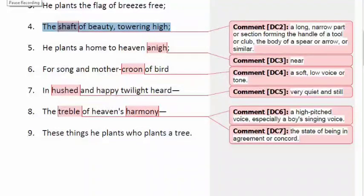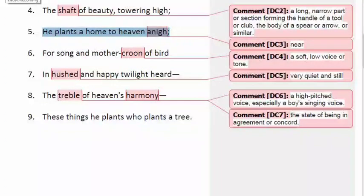He plants a home to heaven anigh. Where do we usually assume heavens to be? Up in the sky. Let's also consider line six: for song and mother croon of bird. The person planting a tree is establishing a home for birds who will be near the heavens because of the tree's height. All the birds, including those that sing melodiously, will have a home up above the stem, in between the branches at a great height near the heaven.